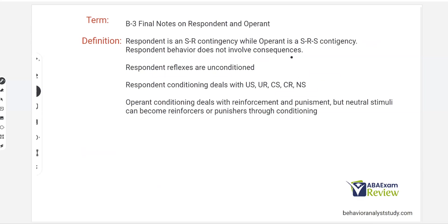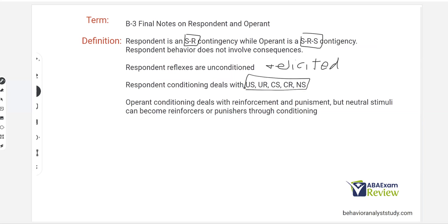Final recap: Respondent — SR, no consequence. Operant — SR, consequence is what matters. Respondent reflexes are unconditioned and elicited. Operant responses are learned and evoked. Respondent conditioning deals with unconditioned stimuli, unconditioned reflex, conditioned stimuli, conditioned reflex, and neutral stimuli. Operant conditioning deals with reinforcement and punishment, but neutral stimuli can become reinforcers or punishers through conditioning. Huge distinction between these two things — our focus is operant, but you've got to know the basics of respondent.